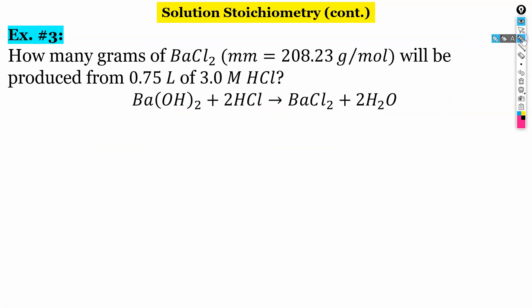All right. And our final example here, it's asking for grams. It says, how many grams of barium chloride will be produced from 0.75 liters of 3 molar hydrochloric acid? So first thing we're going to do is we're going to start with our molarity equation because we've got our volume right here. We need moles. So we've got our molarity equation. So we have 3.0 molar equals x over 0.75 liters. When we rearrange our equation, we get x is equal to 2.25 moles of HCl.